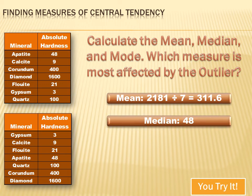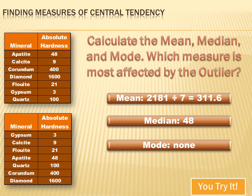The median is the value right in the middle. With 7 data points, there are 3 below the middle and 3 above the middle, making the 7th value the median — which is 48. Looking for a mode: none of the values repeat, so there is no mode.